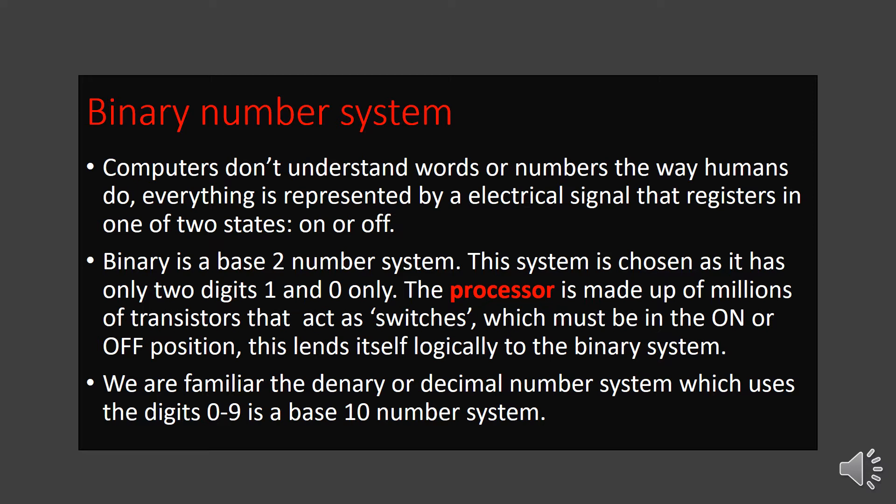Binary number system. When we discuss about the binary number system, we should first remember that a computer is an electronic device which works with electricity. The computer does not understand information as we give it, because we communicate with the computer using a high level language, but the computer can understand only machine language. Machine language is binary numbers.